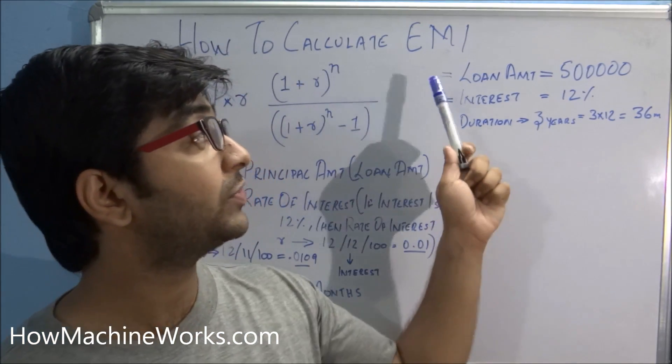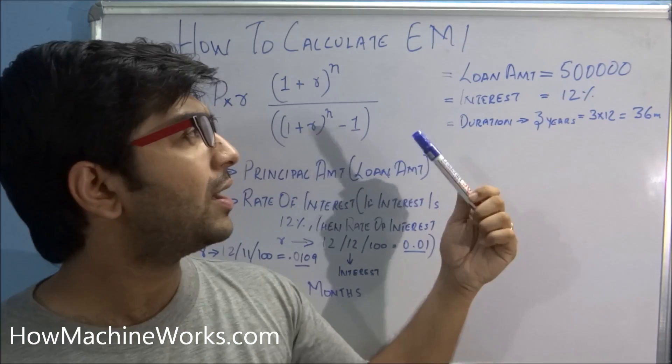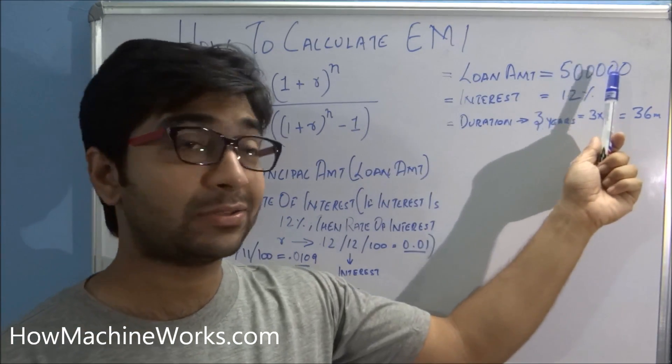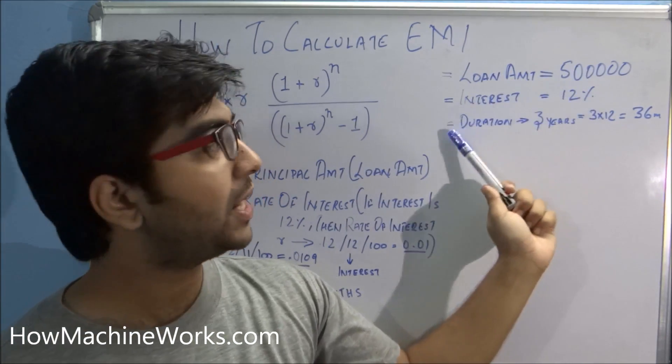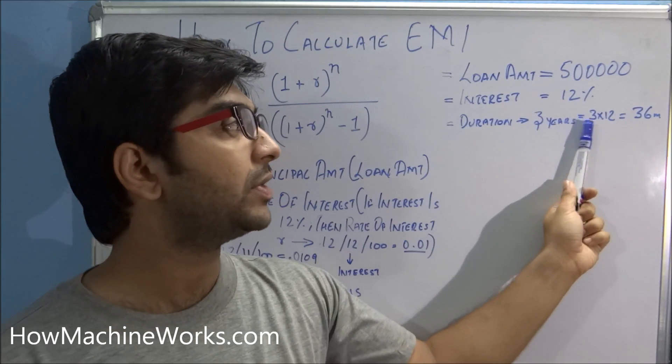The basic data that we'll require: the loan amount that you're going to take. Assuming we're taking 5 lakh as a loan amount, interest rate is 12 percent, and the duration is for 3 years, that is 3 into 12, which is 36 months.